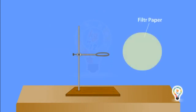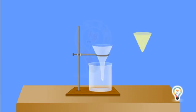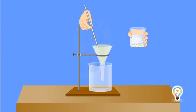Take a round paper and fold it to make a cone and place it over the flask. Pour water mixed with sand into the funnel.